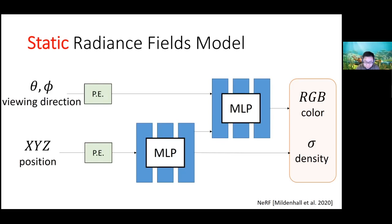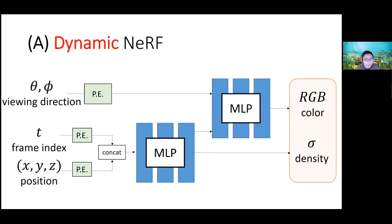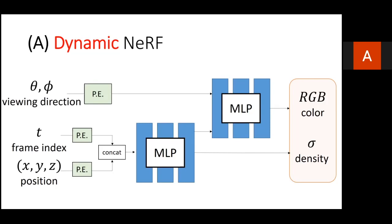The first idea — Option A — is very simple: you just add time information into the process. You add the time as input, so your radiance field model will depend on time. There are actually three papers that do this, adding the time index into the process. It's very straightforward.